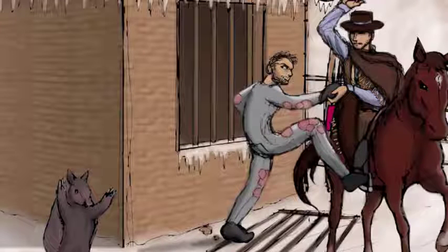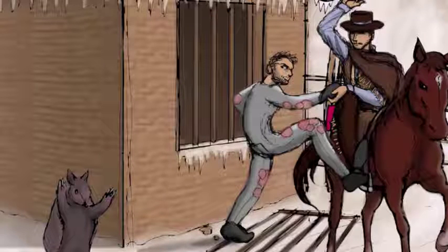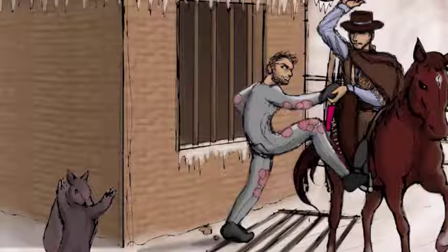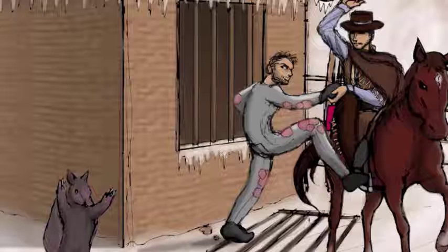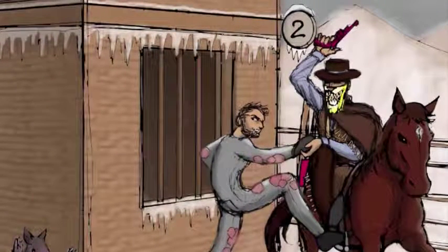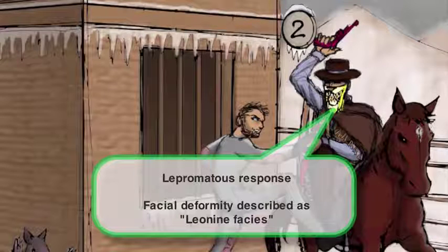Finally, lepromatous leprosy causes profound facial deformity, including thickening of the skin, loss of eyebrows and eyelashes, collapse of the nose, and formation of nodular earlobes. Together these are so deforming that patients are said to have leonine faces, because it supposedly makes them look like they have the face of a lion. We'll demonstrate this with our acid-fast gunslinger wearing a bandana with a lion's face painted on it.